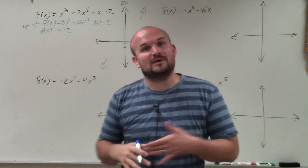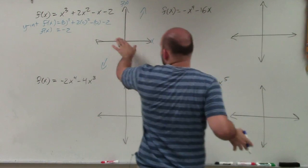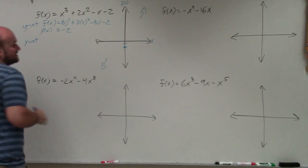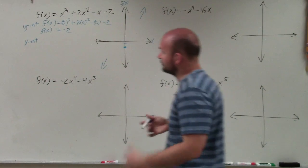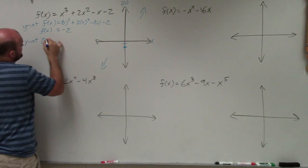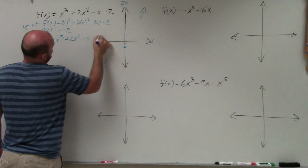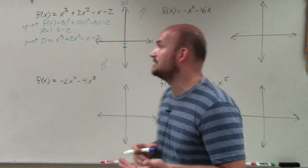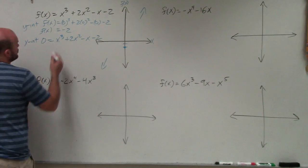Now the last thing we need to do is find the rest of the zeros — where else does the graph cross the x-axis? To find the x-intercepts, we're going to have to use factoring. We're going to set f(x) equal to 0. So we're going to set this equal to 0, and we have x³ + 2x² − x − 2. We need to go ahead and solve this by factoring, and in this case we are going to factor by grouping.